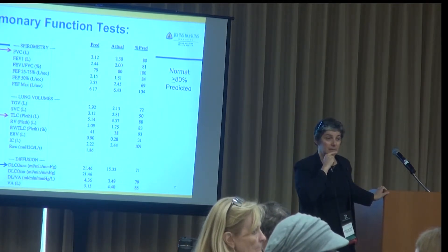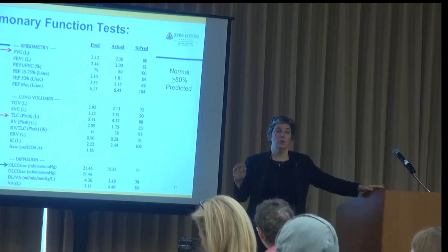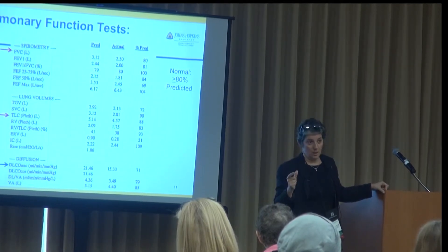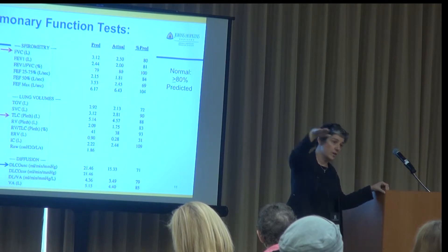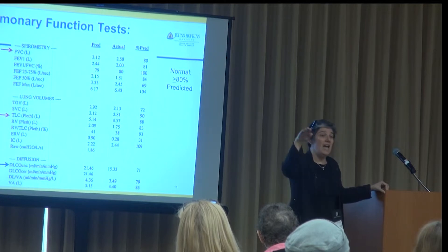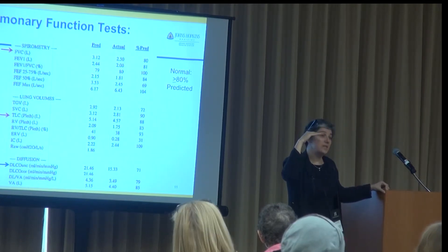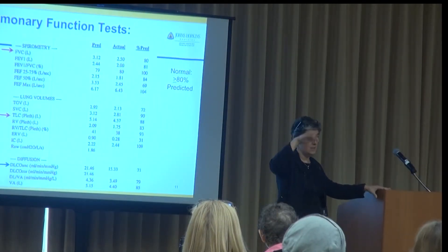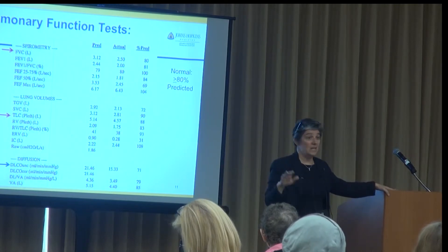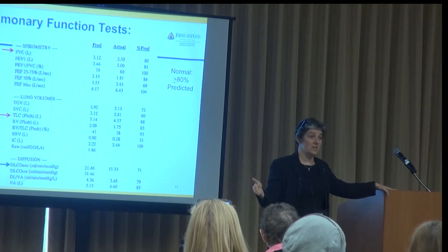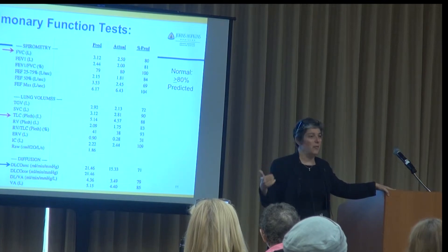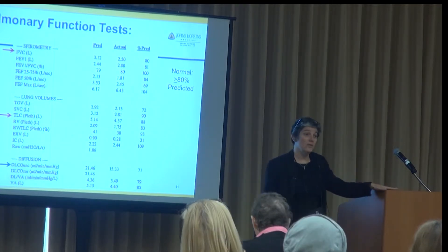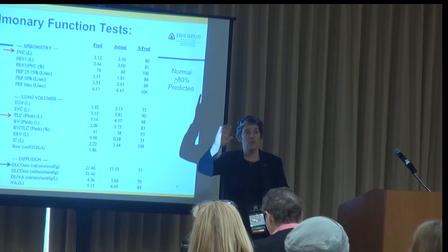Question: how often do you recommend pulmonary function tests? When I meet a person with interstitial lung disease, I check their PFTs three or four times in the first year to get a sense of the trajectory — is this somebody who's rock-solid stable, slowly dropping, or dropping rapidly? In the next 12-month period, we decide on PFT frequency based on those first 12 months. I've had people who were stable and then suddenly drop, which is why having a good connection to your local doctor is important — don't wait until your next scheduled visit; call them if something changes.